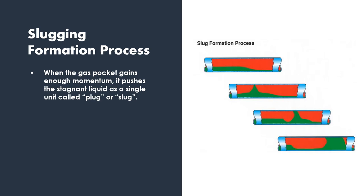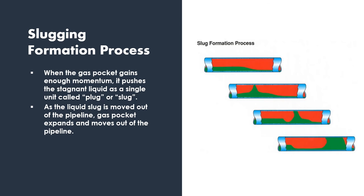The gas pocket eventually gains enough strength or momentum to push the stagnant liquid as a single unit, and that unit is called a plug or slug. As the liquid slug is eventually pushed out of the pipeline, the gas pocket expands enormously at very high velocities, and the liquid chunk or liquid plug is almost ejected from the pipeline.